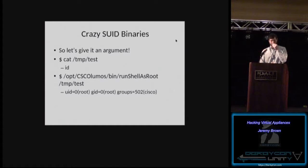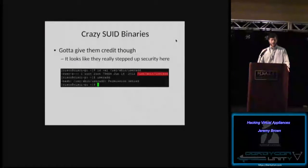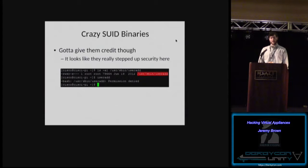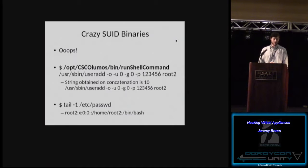Let's give the Cisco Prime Infrastructure binary an argument — maybe it'll do something cool. It reads arguments from a file and, as you'd expect, 'run shell as root' runs that command as root. There's also 'run shell command' which is even easier. Interestingly, they SUID-rooted the useradd binary, available only to the root user and group. That's actually good in isolation, but it doesn't help when we have another binary that runs as root. So the exploit: when you have a shell on the system to escalate privileges, just use 'run shell command,' which is SUID root, and execute useradd to give yourself a root-privileged user.